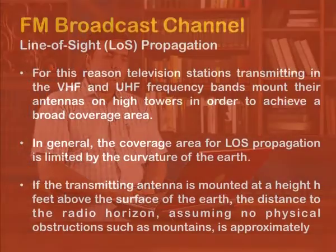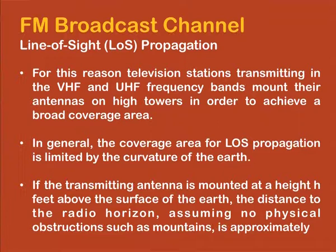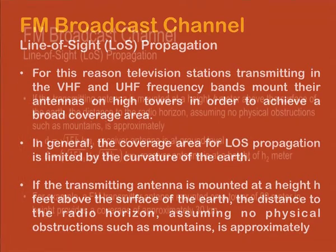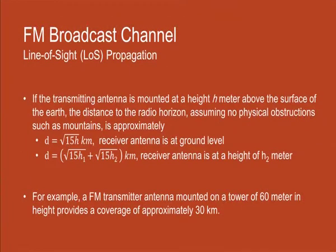For FM radio broadcast, the frequency band of 88 to 108 MHz is used. For television stations, transmission takes place in VHF and UHF frequency bands and the antenna height required is much lower compared to the FM broadcast band. To relate the range of line of sight propagation for FM broadcast, there is a formula that gives the range using the height of the antenna in meters.